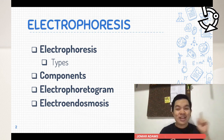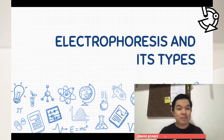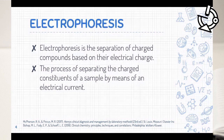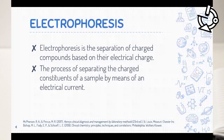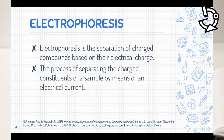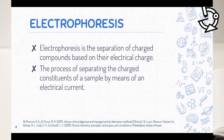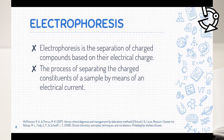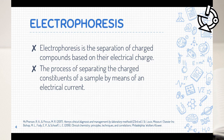Electrophoresis is a method or instrumentation used to separate charged compounds based on their electrical charges — be it a protein or DNA. This process separates the charged constituents of a sample by means of electrical current, exposing the sample in a solution where electric current is applied, mobilizing the analytes into a support medium where they are separated from their different components.